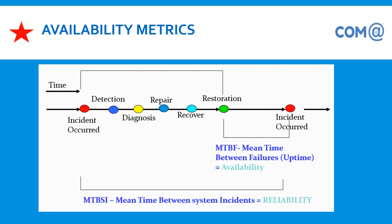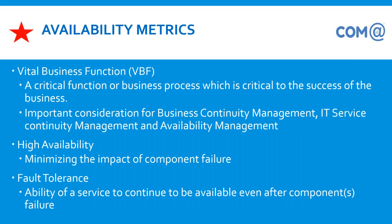Reliability is measured by how frequently a system goes down. If a printer goes offline three or four times a day, it means the printer is not reliable — there are many issues, long print queues, and users are dissatisfied. We need to ensure reliability is maintained for all services. Vital business function refers to a critical function or business process that is critical to the success of the business. Maintaining availability as per customer expectations helps improve business performance and provides good customer satisfaction.